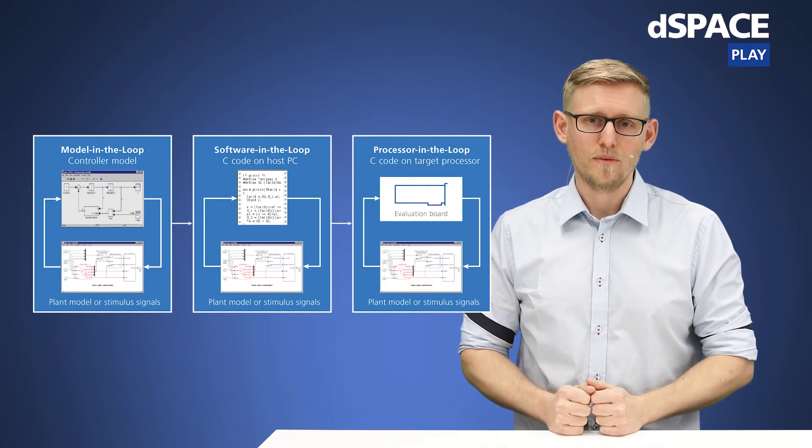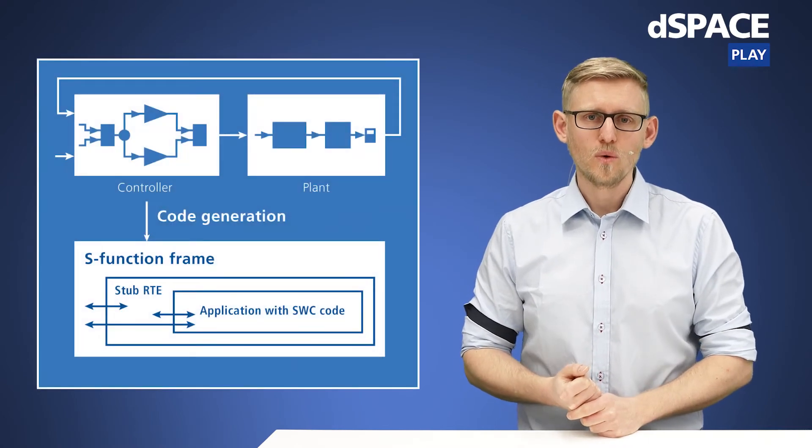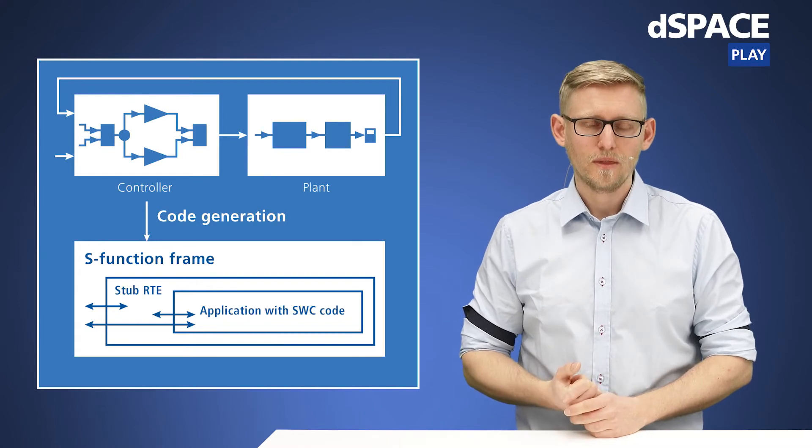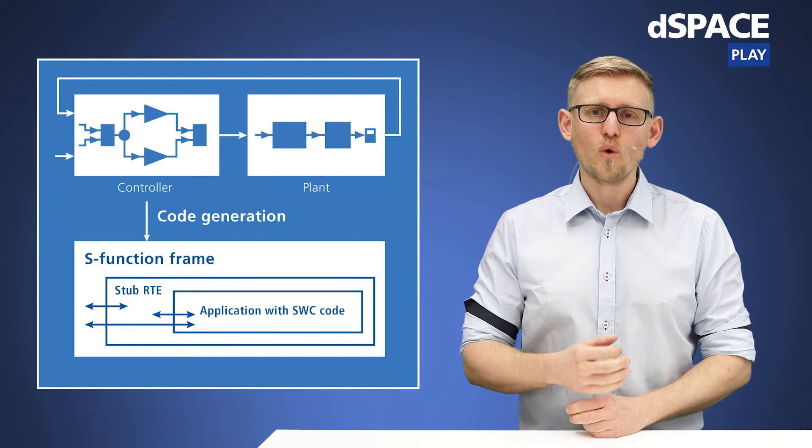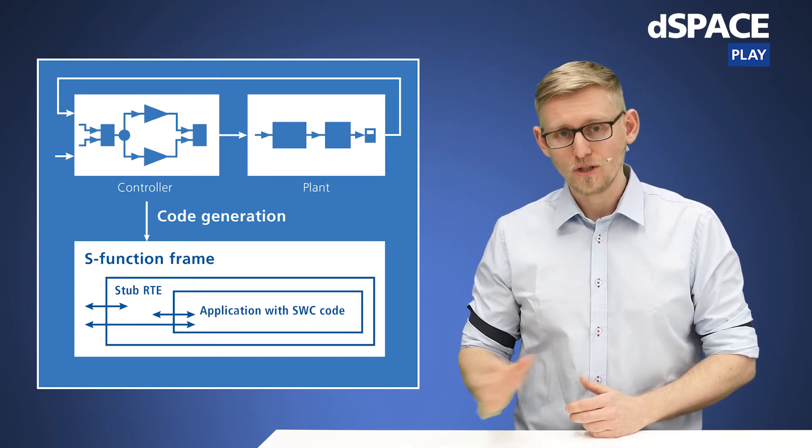TargetLink provides functionality for this specific test use case. While generating code for classic AutoSAR, TargetLink also generates a non-production RTE — called the stub RTE — for SIL tests in TargetLink. It mimics communication via the RTE, although it does not yet exist on production level. A similar approach applies to the adaptive AutoSAR use case. TargetLink encapsulates the middleware calls via compiler macros so that in SIL mode on your local machine, communication is mapped directly via internal communication within the adaptive AutoSAR function. This abstraction layer allows you to test your software quickly, easily, and cost-effectively in both AutoSAR use cases.